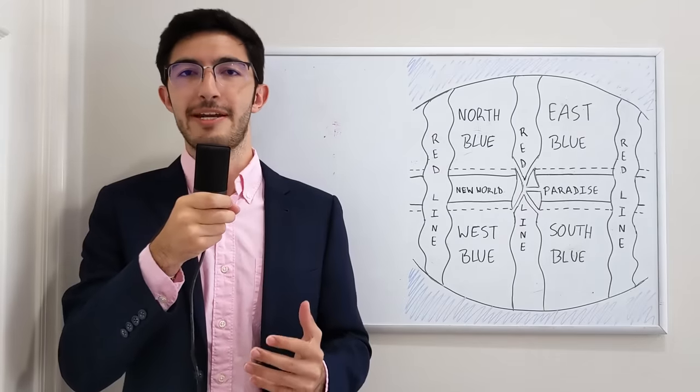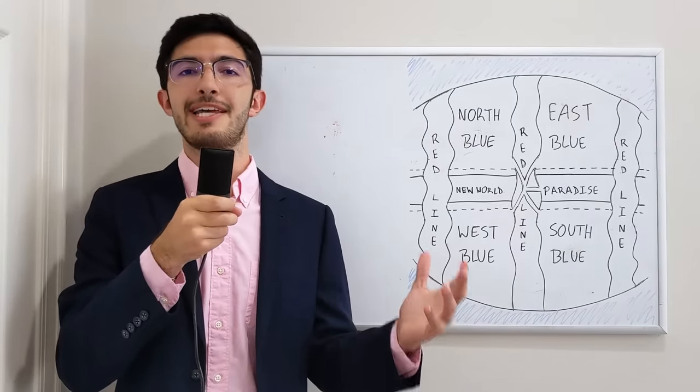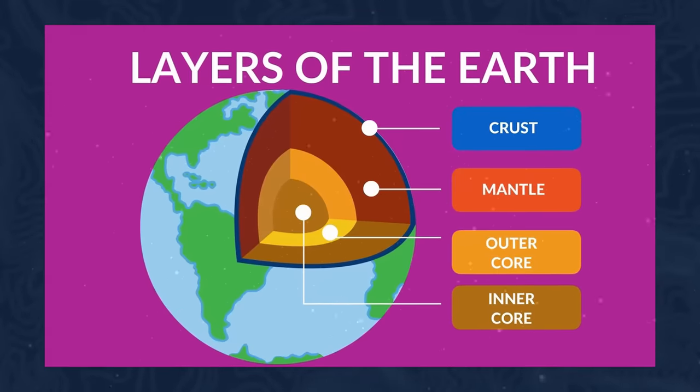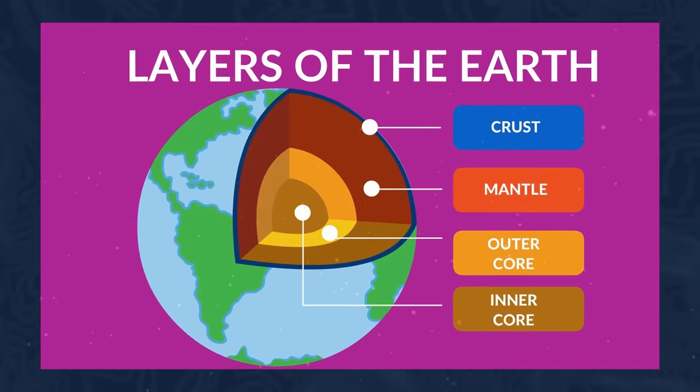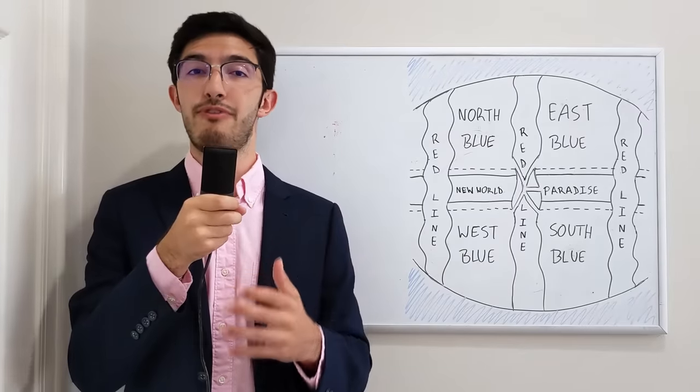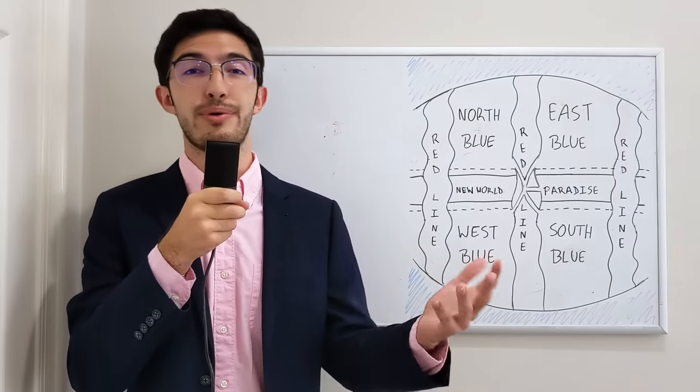And the existence of a magnetic north in the world of One Piece also suggests that that world has a very similar structure to our own planet and that it has a solid inner core and a more liquid outer core that creates a magnetic field around the whole planet, thus allowing compasses to function, at least in certain parts of the One Piece world, as we will see, because they don't function everywhere and anywhere.